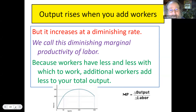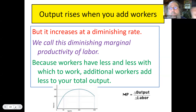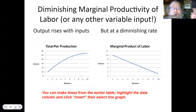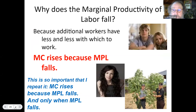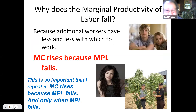Output rises by adding more workers, but at a diminishing rate — diminishing marginal productivity of labor — because workers have less and less with which to work. Additional workers add less to your total output, meaning to get the same increase in output you need more workers, more cost. Why does marginal productivity of labor fall? Because additional workers have less and less with which to work. Why does marginal cost rise? Because the marginal product of labor falls.